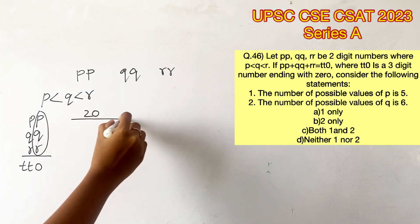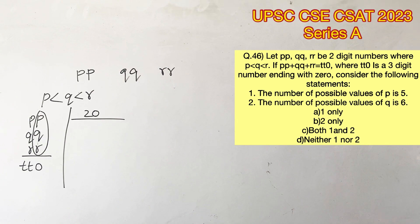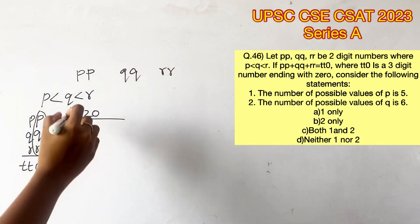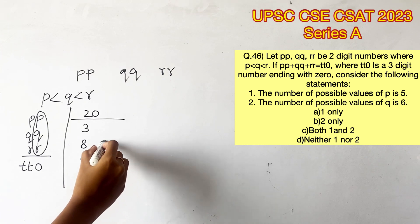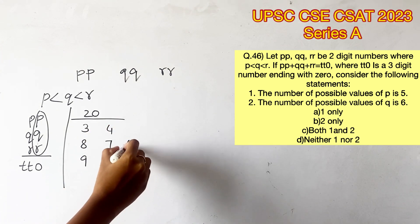Let's find the possibilities where we can get 20 as the sum. If you consider 9 in the place of R and 8 in the place of Q, that will leave us with 3 remaining so that it will sum up to 20.